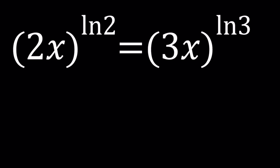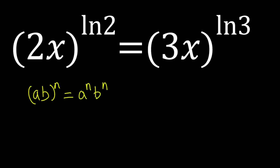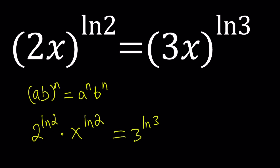So here's one thing we can do: distribute the power. When you have something like a times b to the power n, you can write it as a to the power n times b to the power n. So we can distribute the power. To do that, we're going to write this as 2 to the power ln2 multiplied by x to the power ln2, and that equals 3 to the power ln3 times x to the power ln3.